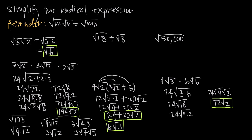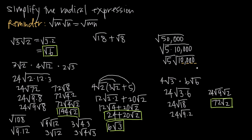For the square root of 50,000, we break this into the square root of 5 times 10,000. We split these into their own square roots: square root of 5 times square root of 10,000. The square root of 10,000 is 100 — an easy way to see this is to count the zeros: 10,000 has 4 zeros, so its square root has half that, which is 2 zeros, giving us 100. So our final answer is 100 times the square root of 5.